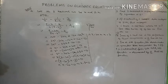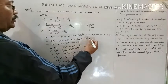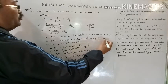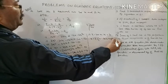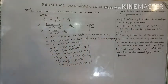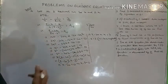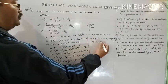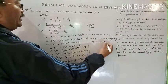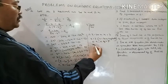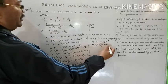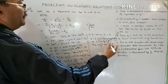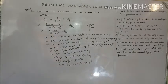Applying zero product rule: x equals 20 or x equals 3. But x equals 20 is not admissible because the sum of the two natural numbers is 8, so one number cannot be 20. Therefore x equals 3, and the other number is 8 minus 3 equals 5. The required numbers are 3 and 5. Check: 3 plus 5 equals 8.